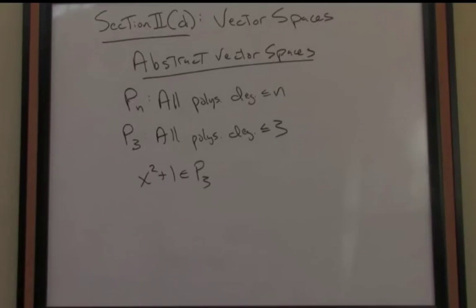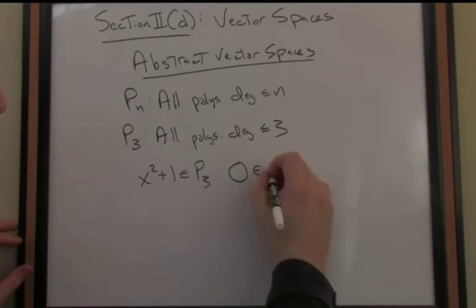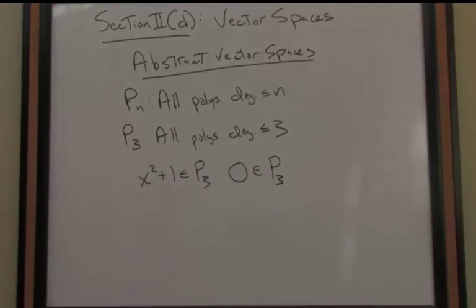You might also note, in terms of our axioms, is this really a vector space? Is the zero vector in there? What is the zero vector? The zero vector here is actually just the zero polynomial. In other words, it's the constant zero.